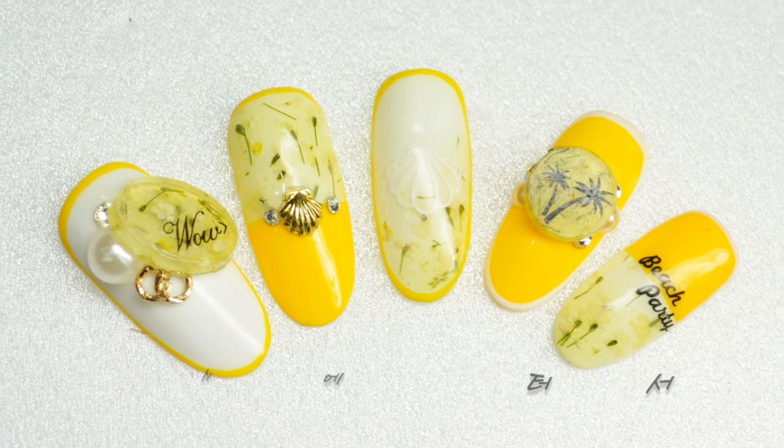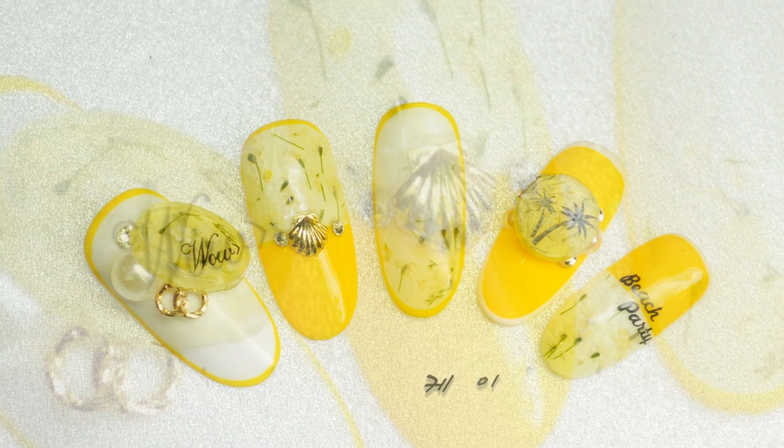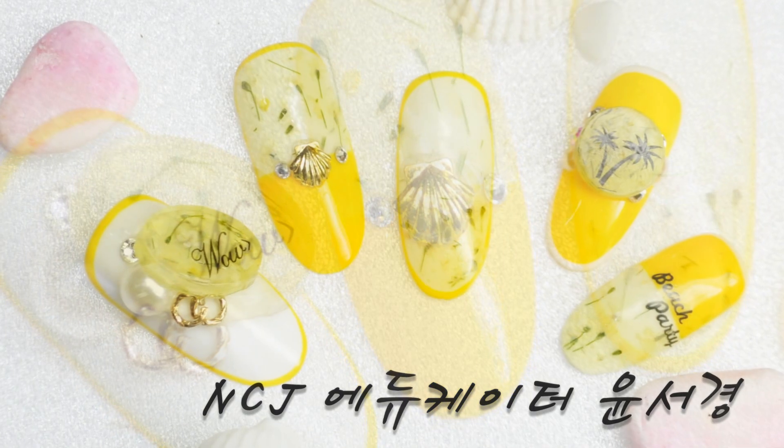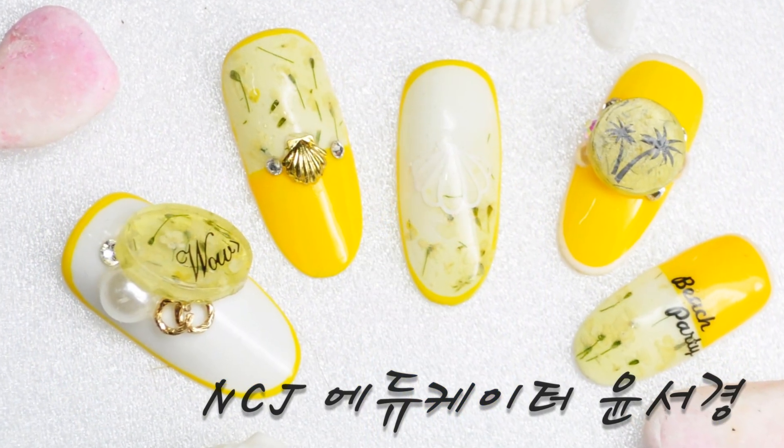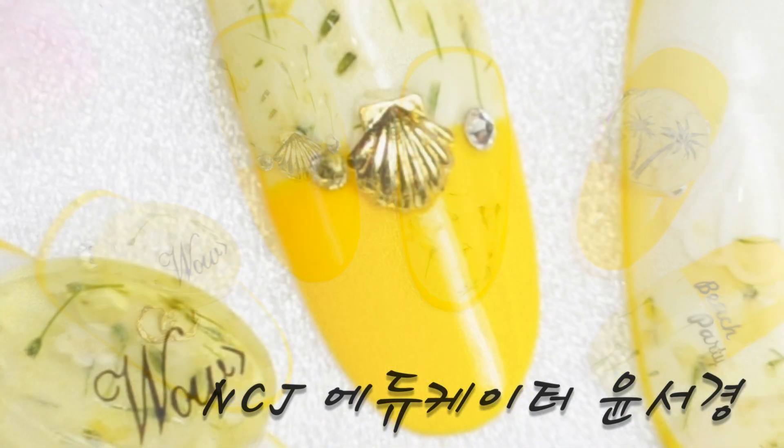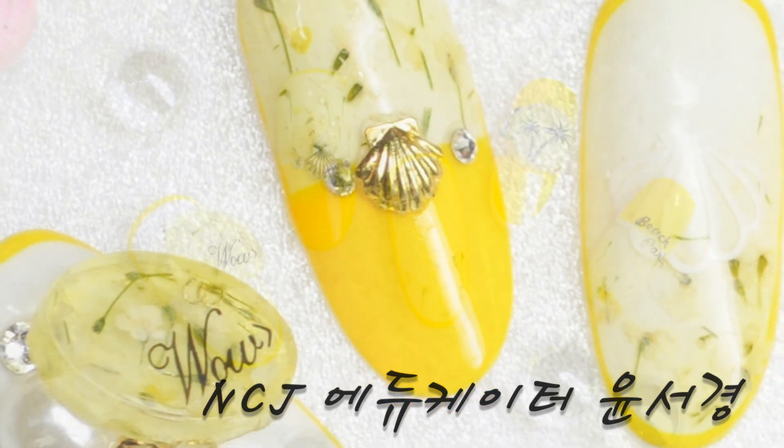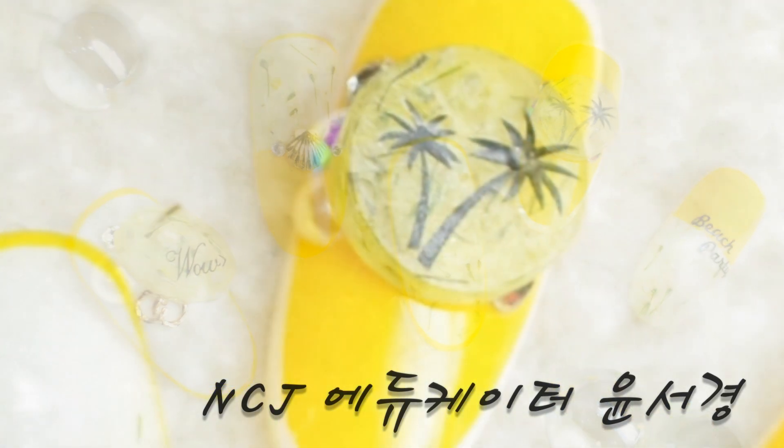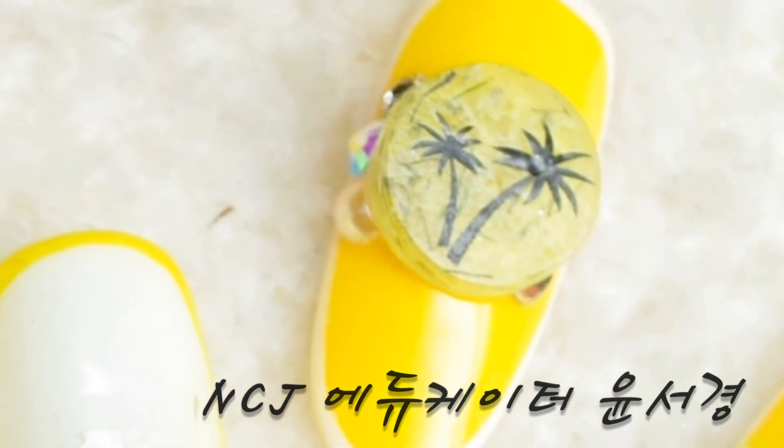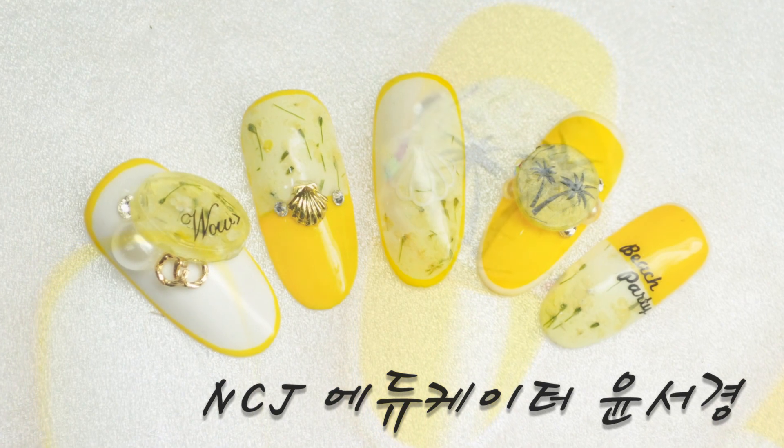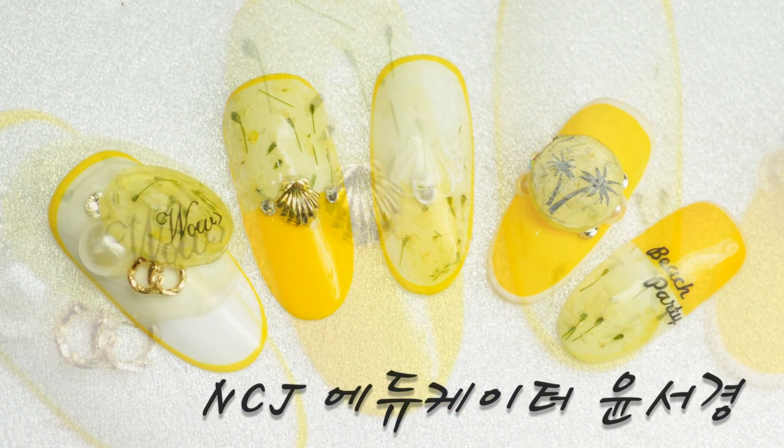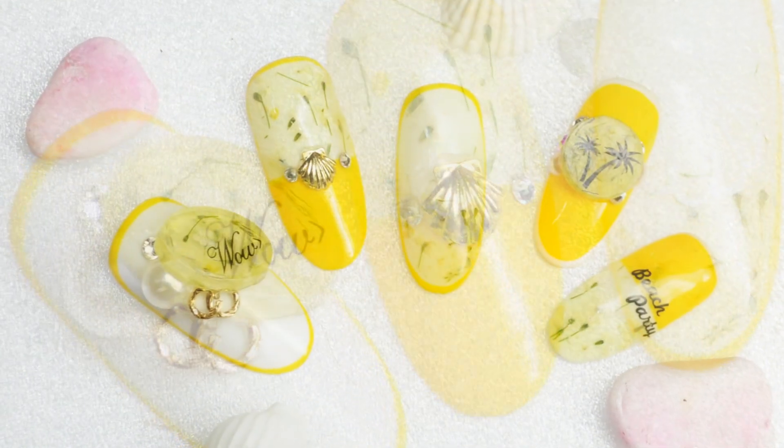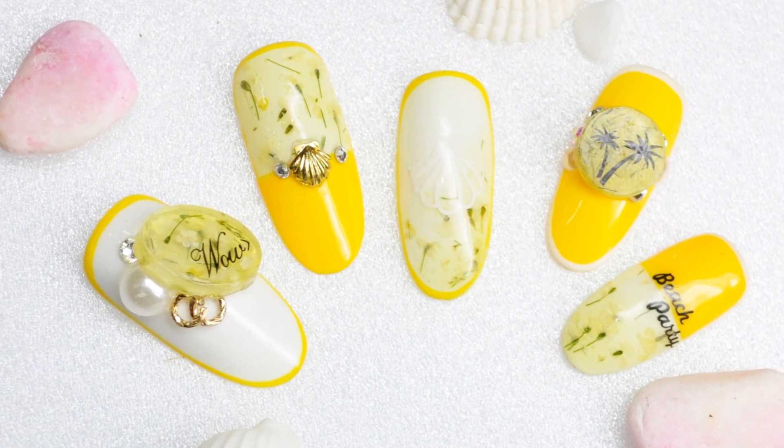안녕하세요. NCJ 에듀케이터 윤석영입니다. 벌써 날이 많이 더워졌어요. 그래서 저는 여름을 대표하는 컬러인 C60번 노란색 컬러와 F01번 노란색 플라워 이 두 가지를 메인으로 해서 여름 느낌이 물씬 나는 아트를 한번 진행을 해볼 건데요. 오늘은 검지에 있는 팁과 약지에 있는 팁 두 가지를 진행하도록 하겠습니다. 그럼 첫 번째로 검지에 있는 아트 먼저 진행해 볼게요.